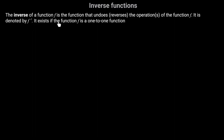The inverse exists if the function f is a one-to-one function. To better understand this definition, let's look at an example. Let's say that I have the function f equal to 2x minus 3, defined for all values of x greater than or equal to 0, where y is equal to f of x — so the output is y.